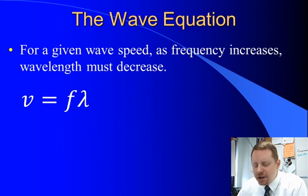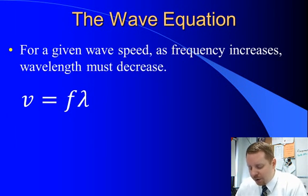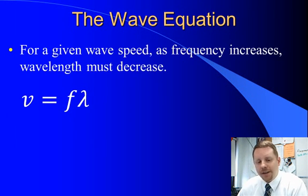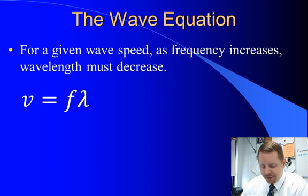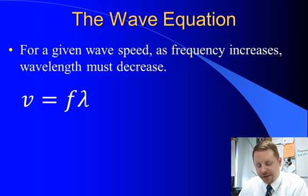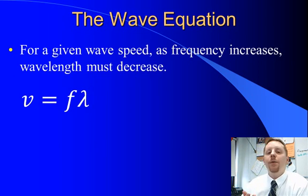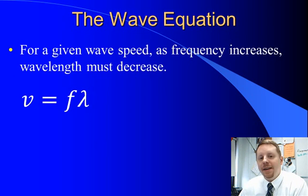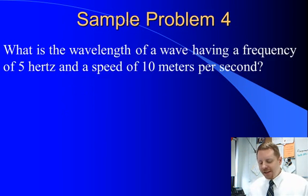The wave equation says for a given wave speed or wave velocity, as frequency increases, wavelength must decrease. So the wave velocity is equal to frequency times wavelength. Now, what's important to note here, the wave velocity doesn't depend on frequency and wavelength. You can't increase the frequency of a wave and have it speed up. This is a relationship that shows you how the frequency and the wavelength are related.